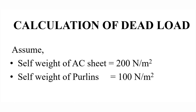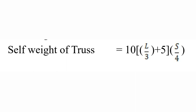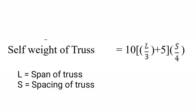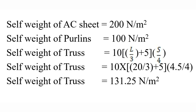The self-weight of purlin is equal to 100 N per m². This value comes from IS-875 Part 1. The self-weight formula is: 10L/3 + 5 × S/4, where L equals span of the truss and S equals spacing of the truss. Substituting L = 20 meters and S = 4.5 meters: 10 × 20/3 + 5 × 4.5/4 = 131.25 N per m².